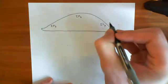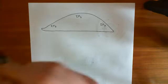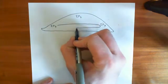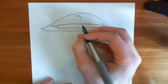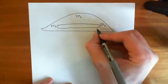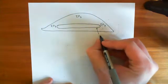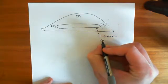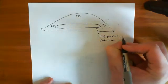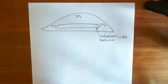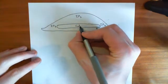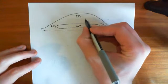What does IP3 do? IP3 is going to trigger the release of calcium from the intracellular stores. There are intracellular calcium stores all over the cell. We will draw this crudely with a single endoplasmic reticulum spanning the entire cell. This represents the endoplasmic reticulum, or ER, which is one of the main intracellular stores of calcium. The endoplasmic reticulum is a major store of calcium — it has calcium inside it.